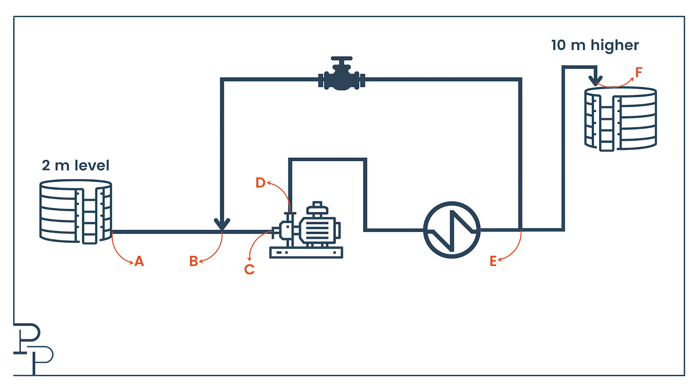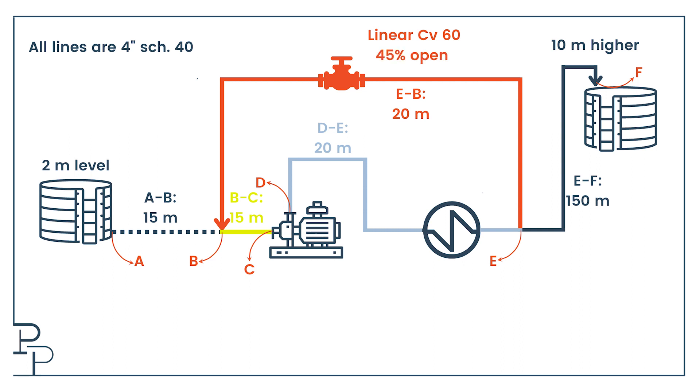If we are to build system curves, we need more details and the full geometry of our system. Let's say all our lines are four inch schedule 40, giving us the inner diameter. Portions AB and BC are both 15 meters long. Portion DE excluding the heat exchanger and portion EB will both be 20 meters long. Portion EF will be 150 meters long. The valve has a linear characteristic with a fully open CV of 60, and we're going to leave it at a constant 45% opening.